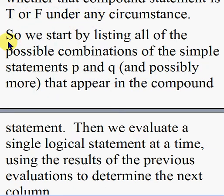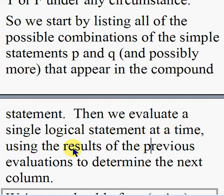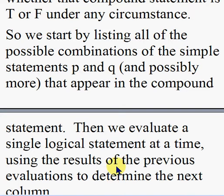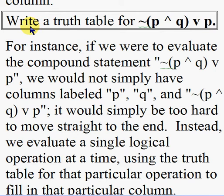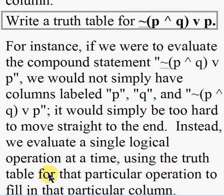We start by listing all possible combinations of the simple statements P and Q that appear in the compound statement. Then we evaluate a single logical operation at a time, using the results of previous evaluations to determine each next column. We would not simply skip straight to the final result — it would be too hard. Instead, we evaluate one logical operation at a time using the truth table for that particular operation.